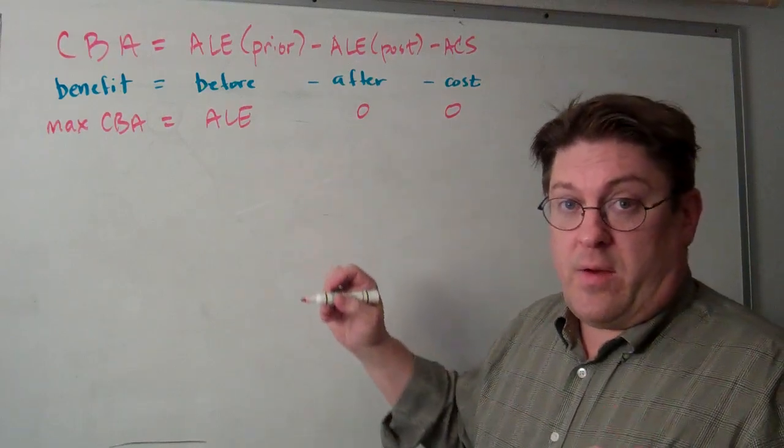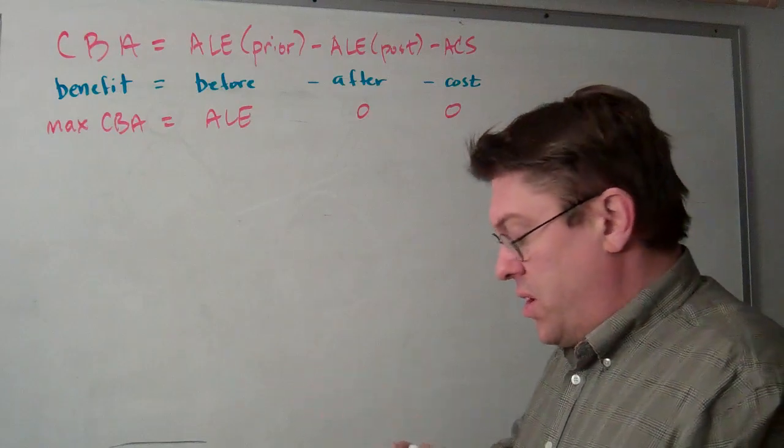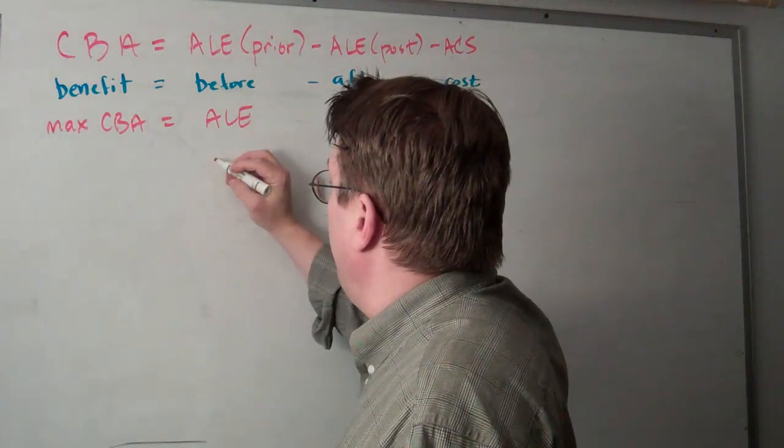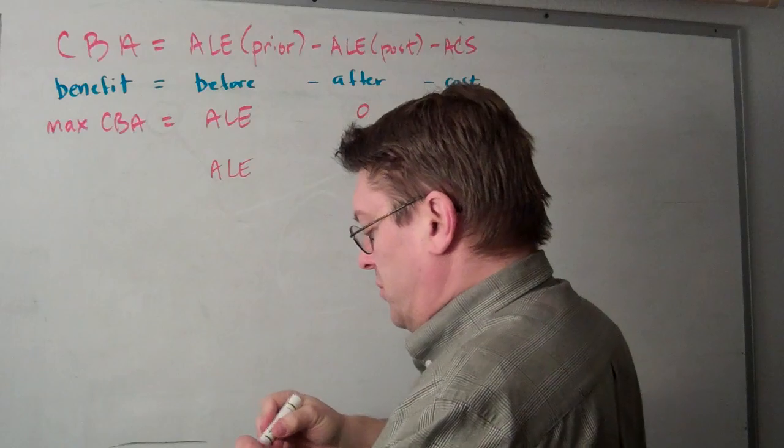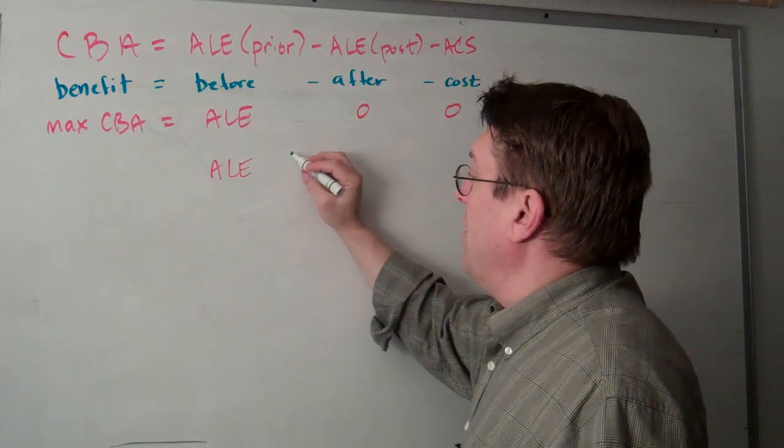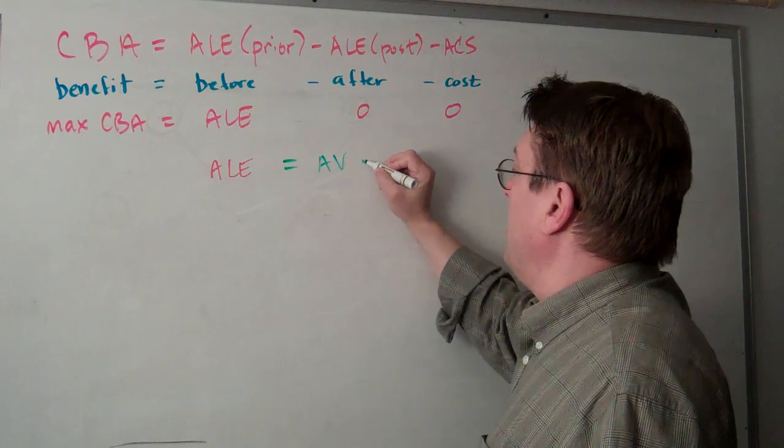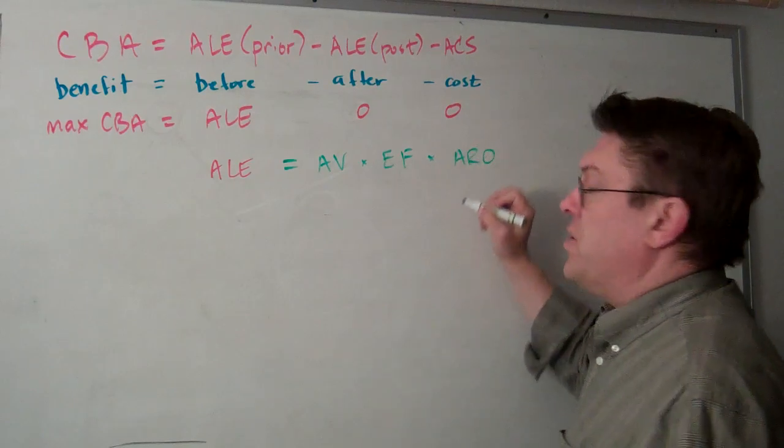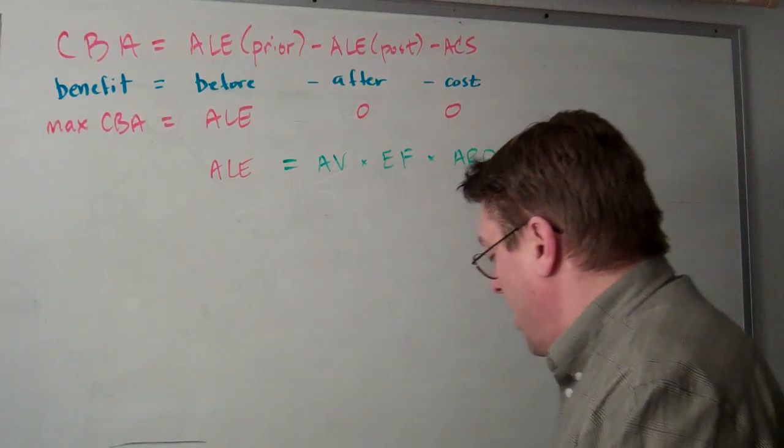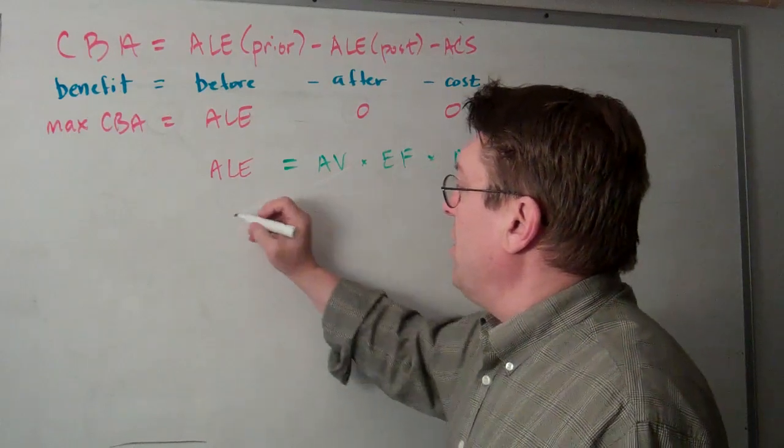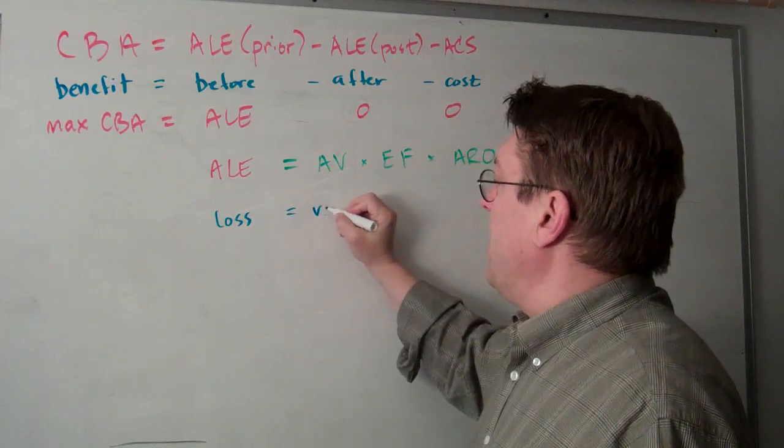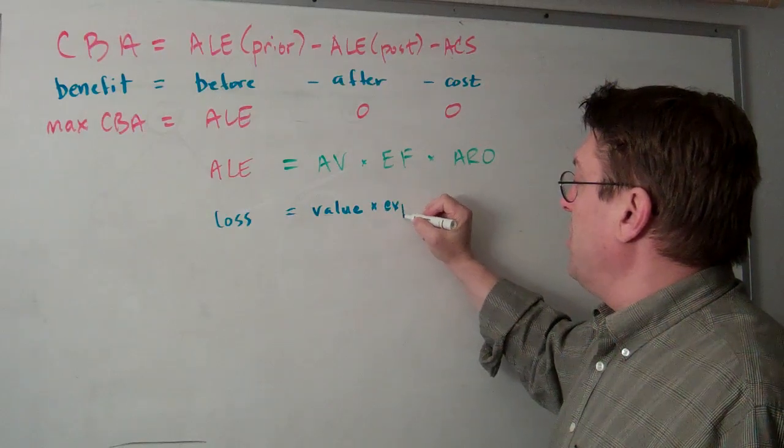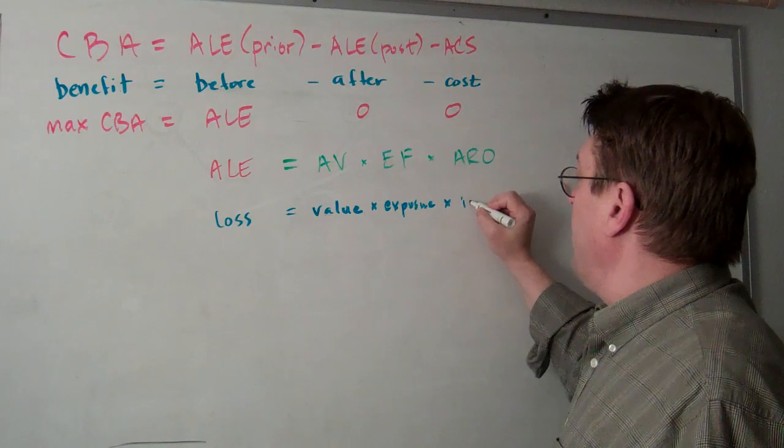That's relatively straightforward. Now let's take a look at the components of ALE. ALE equals the asset value times the exposure factor times ARO, which is the annualized rate of occurrence. You can think of this as loss equals value times exposure times the number of incidents.